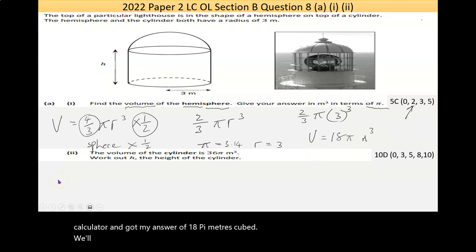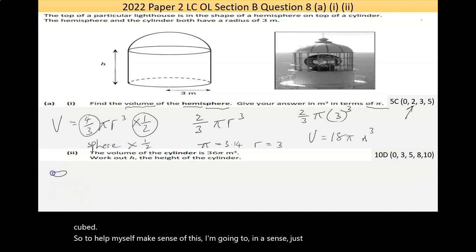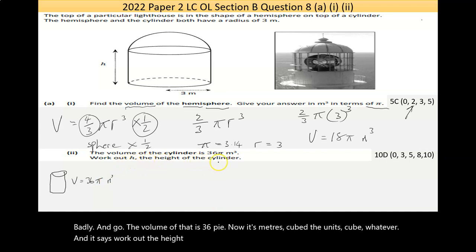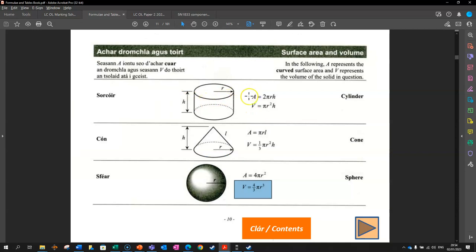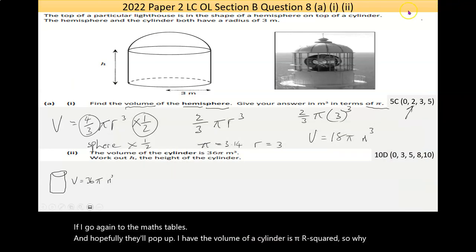Now, we'll problem solve the next part there, which says the volume of the cylinder is 36 pi meters cubed. So to help myself make sense of this, I'm going to, in a sense, just for my own sake, draw a cylinder badly, and go, the volume of that is 36 pi. Now, it's meters cubed, the units cubed, whatever. And it says work out the height of the cylinder. Now, if I go again to the maths tables, and hopefully they'll pop up, I have the volume of a cylinder is pi r squared. So why not write that on the page?